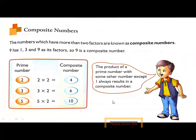And next type of number is composite numbers. Look at the definition of composite numbers. The numbers which have more than two factors are known as composite numbers. For example, number 9. The factors of 9 are 1, 3 and 9.